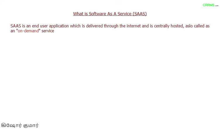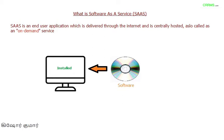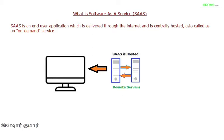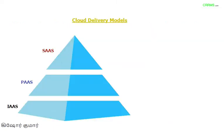SaaS is an end-user application delivered through the internet, centrally hosted, and called an on-demand service. Previously, you would install software physically on your computer, but with SaaS the software is hosted on remote servers and accessed via a browser by logging into the service. Customers pay through a subscription model — monthly or yearly.